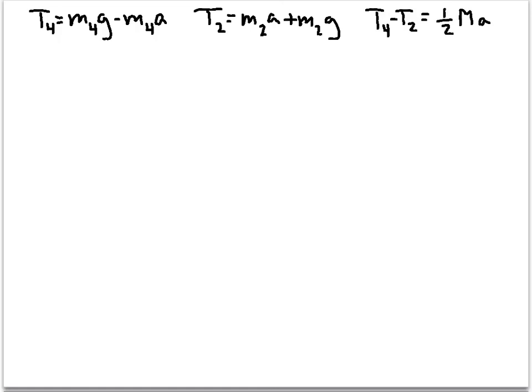The three equations we have so far. T4 equals M4G minus M4A. T2 equals M2A plus M2G. And for the pulley, T4 minus T2 equals one half the mass of the pulley times A. Now let's combine all of those.